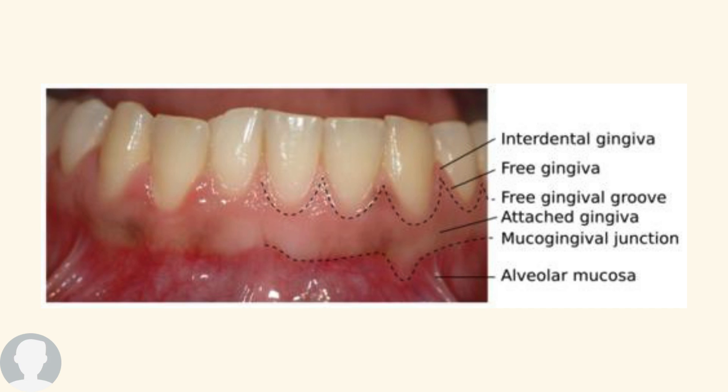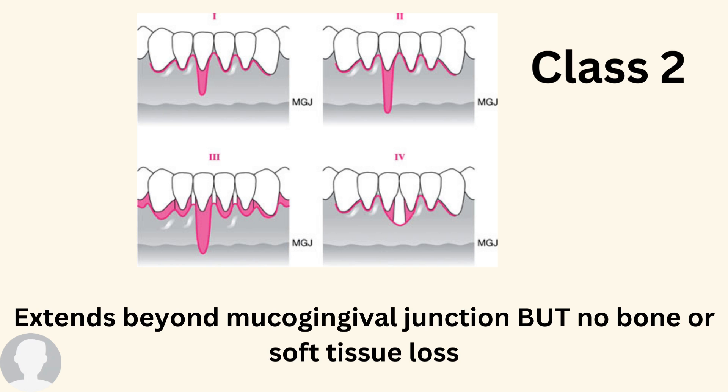In Class 2, the recession extends beyond the mucogingival junction, but there is no bone or soft tissue loss — all teeth are intact and only one tooth is affected. When there is bone or soft tissue loss, multiple teeth are affected because the bone is continuous across teeth.